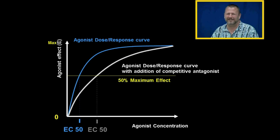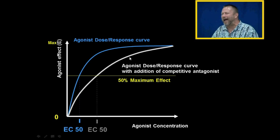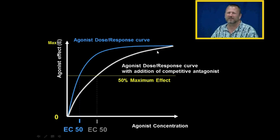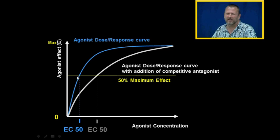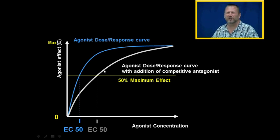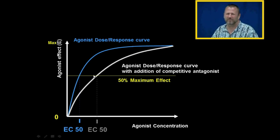If we use a competitive antagonist as a drug, the body might have the ability to add more and more hormone to overcome the effect of the competitive antagonist. The dose required to achieve half of maximal effect is marked in blue, and with competitive antagonist in solution, it takes more dosage of medication to achieve half of maximal effect.